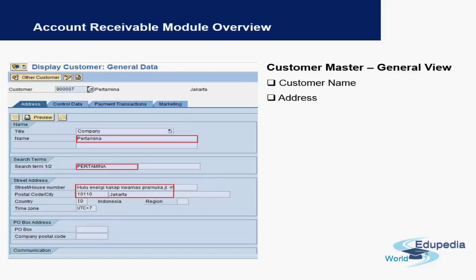This is how the general data first screen looks like — it's very similar to vendors, and you will see the name of the customer and the address of the customer on the screen.